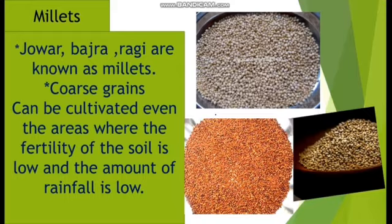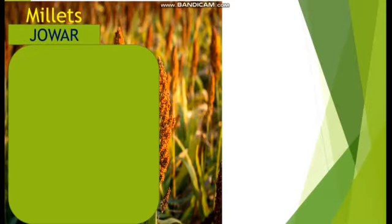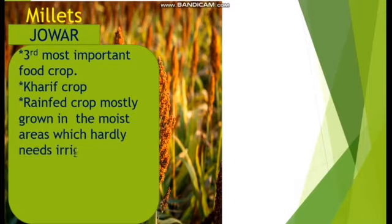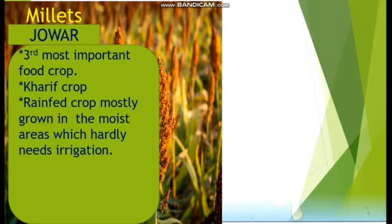These grains are very high in nutritional value. Jowar is the third most important food crop with respect to area and production. It is cultivated as a Kharif crop, and in southern India it is cultivated throughout the year. It is a rain-fed crop mostly grown in moist areas which hardly need irrigation. Maharashtra receives low rainfall, which is enough for jowar cultivation, and that is probably why Maharashtra produces jowar on a large scale.